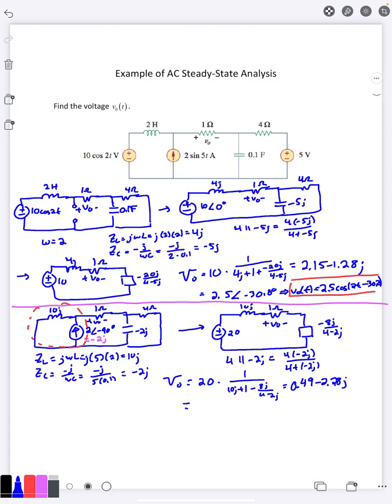Put that into polar notation. We'll be getting 2.3 angle negative 77.9 degrees. So that means this V0 of t is 2.3 cosine 5t minus 77.9 degrees. That gives me my second V0 that we're going to combine together.